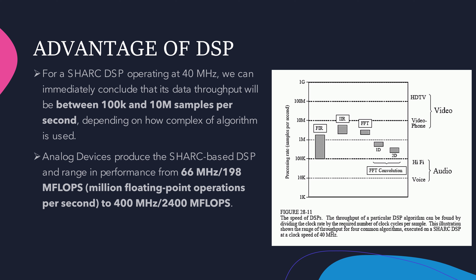As shown in the diagram, it displays the speed of DSP's processing rate in samples per second. There are different types of DSPs, and the particular DSP algorithm throughput can be found by dividing the clock rate by the required number of clock cycles per sample.